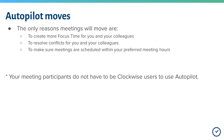Your meeting participants do not have to be on Clockwise to use autopilot, but we highly encourage that they at least sign up to set their ideal meeting preferences, since this feature does not exist in Google Calendar.